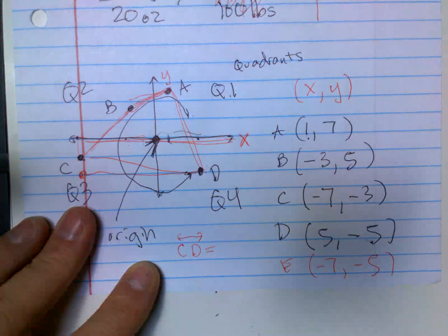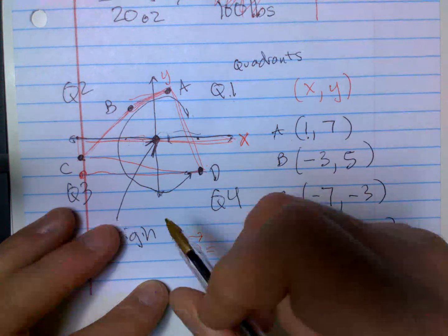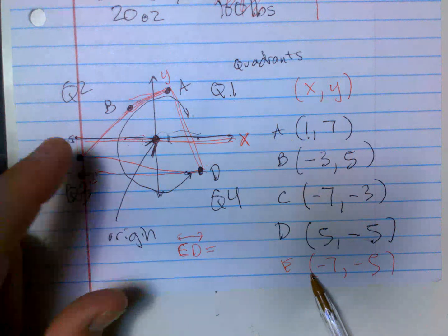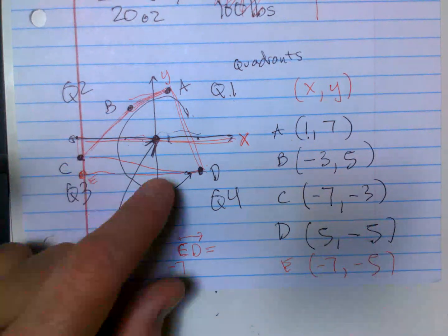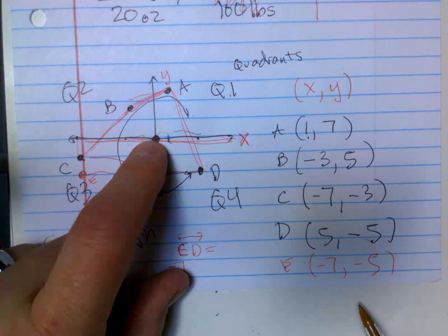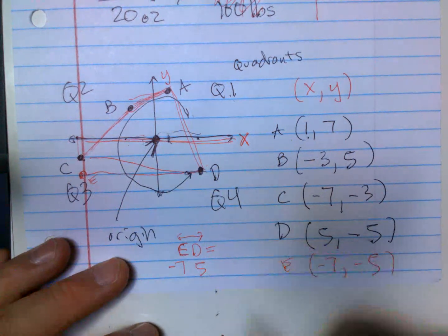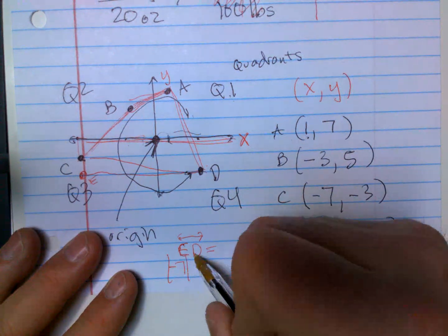Equals how far? All right, or no, not C. This would be E, sorry, that's point E. Well, this was negative seven this way, and then it was five this way. So I want to add those together.